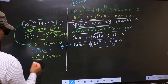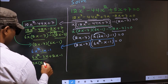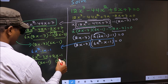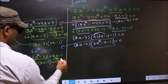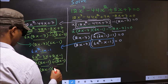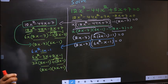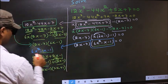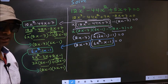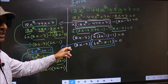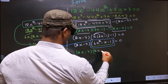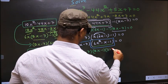From the first two terms, what can be taken out common is 3x. So you get 3x times (2x minus 1). From the remaining terms, 2x goes inside so outside you get plus 1. Take out (2x minus 1) common, giving (2x minus 1)(3x plus 1). In place of this quadratic we now write this, so the full equation becomes (2x minus 7)(2x minus 1)(3x plus 1) equal to 0.